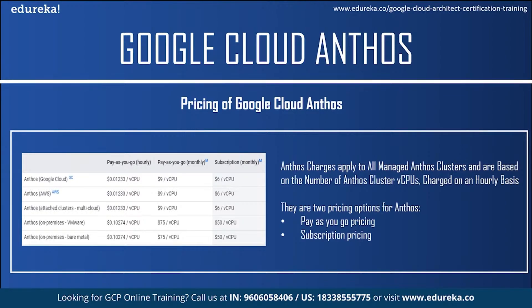As you can see in the image, there are three payment options: pay-as-you-go on an hourly basis, pay-as-you-go on a monthly basis, and the subscription for monthly. You can see the rates for each virtual CPU in various deployment models such as Google Cloud, AWS, Multi-Cloud, On-premises VMware, and On-premises Bare Metal.